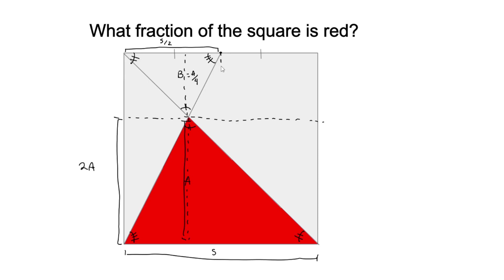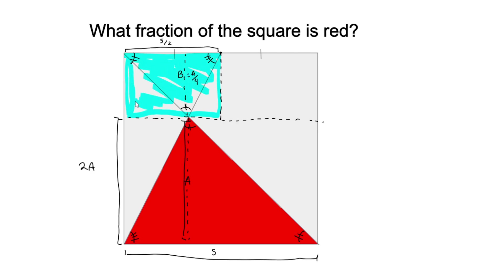Similarly, we can do this with this rectangle here. This part's area would be A over two, which is actually exactly the same area as this part over here.